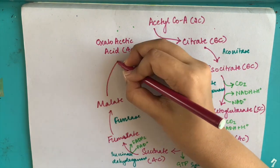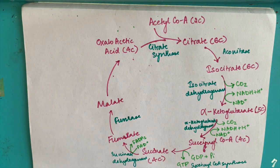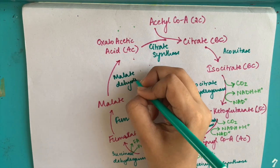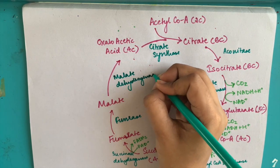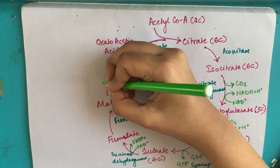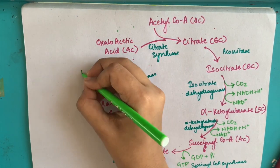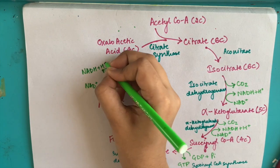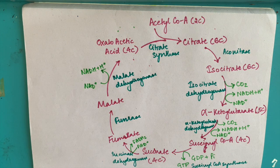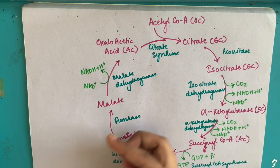Malate is finally converted back to oxaloacetic acid. The 4-carbon malate is converted back to 4-carbon oxaloacetic acid using malate dehydrogenase. As the name suggests, there is oxidation of malate, hence NAD+ is getting reduced to NADH plus H+. You can see the cycle has taken one full turn to produce back oxaloacetic acid from where it started.